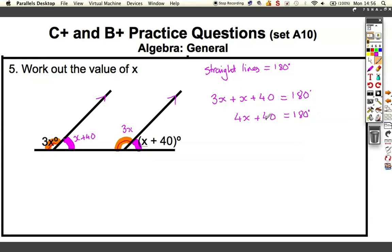4x plus 40 must equal 180, just collecting the x's up. If I take away 40 from both sides of the equation, 4x is equal to 140, and then I need to divide both sides of the equation by 4. So x equals 140 divided by 4. Well, we can do that, 140 divided by 4, it's half it and half it again, which tells us that x is equal to 35. Half is 70, and half again is 35 degrees.